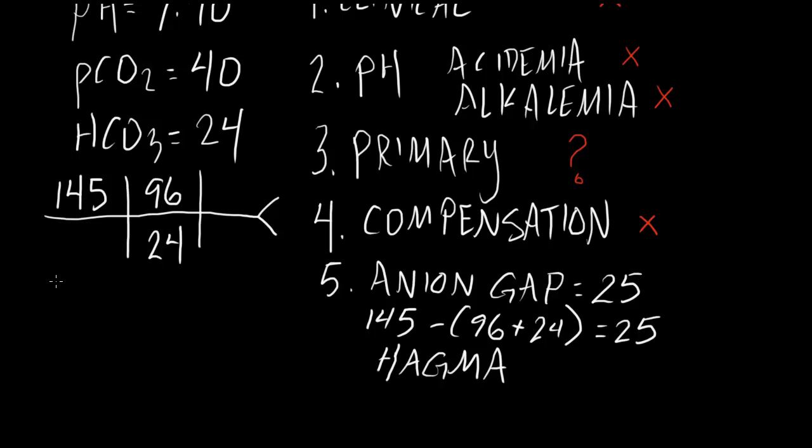Okay, well, let's go on to our sixth step. And our sixth step, of course, is our delta-delta. And the delta-delta is something that everybody always has trouble with. But it's actually really simple. So the delta-delta is the change in anion gap over the change in bicarb.